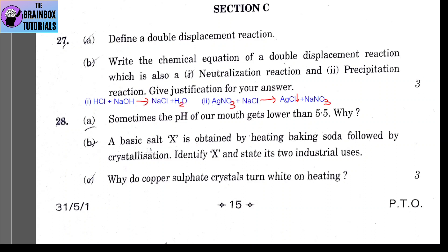Number B: a basic salt X is obtained by heating baking soda. Baking soda means sodium bicarbonate, NaHCO₃. We got a basic salt X followed by crystallization. Identify X and state its two industrial uses. So X is Na₂CO₃.